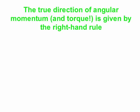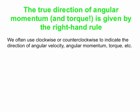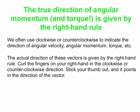It turns out that clockwise and counterclockwise are fine, but they're not really the true direction of angular momentum, angular velocities, or torques. The true directions are given by the right-hand rule. We'll keep using clockwise and counterclockwise — about 92% of the time that's fine. But every once in a while you really need the actual direction of these vectors, which you find with your right hand: curl your fingers the way the object is rotating, stick your thumb out, and it points in the direction of the actual vector.